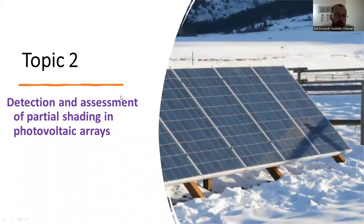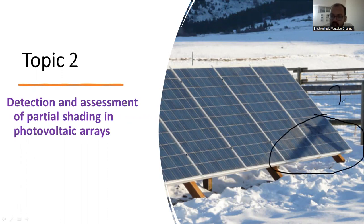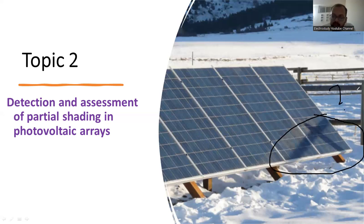Now I would like to suggest another topic — very, very important in the field of SPV: detection and assessment of partial shading in solar photovoltaic arrays. First of all, you have to understand what partial shading is. We have a solar panel arranged at a certain angle based on the azimuth angle. You can see the angle of inclination. Because of the arrangement of the stand, it causes shading here — there is a shading effect. Definitely, the shading effect impacts the performance of the solar panel.